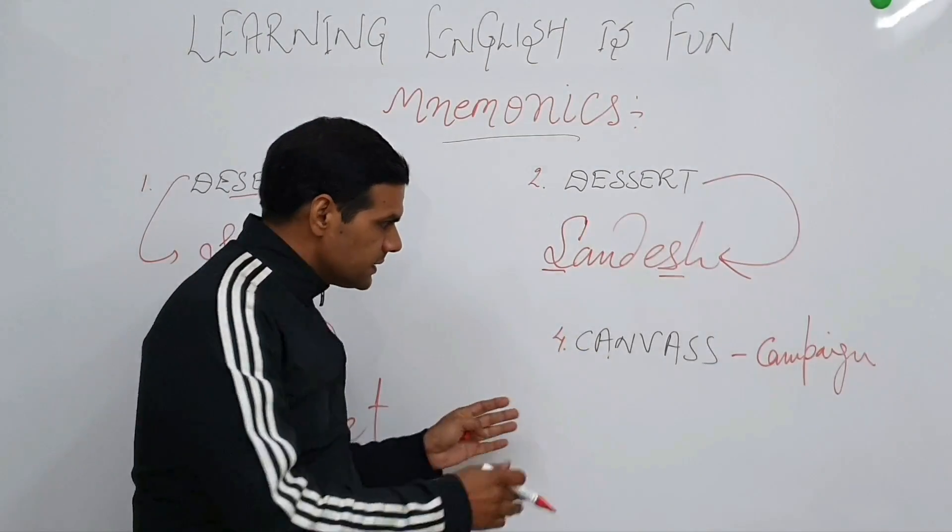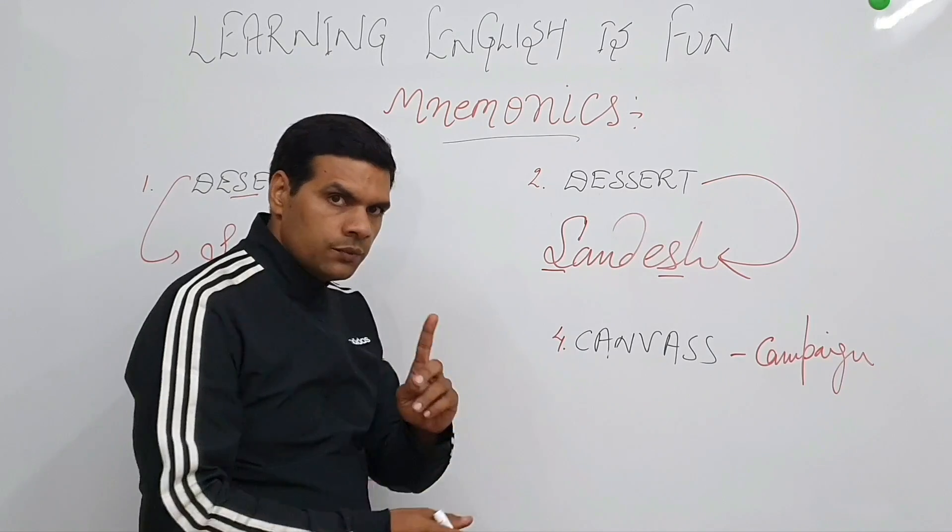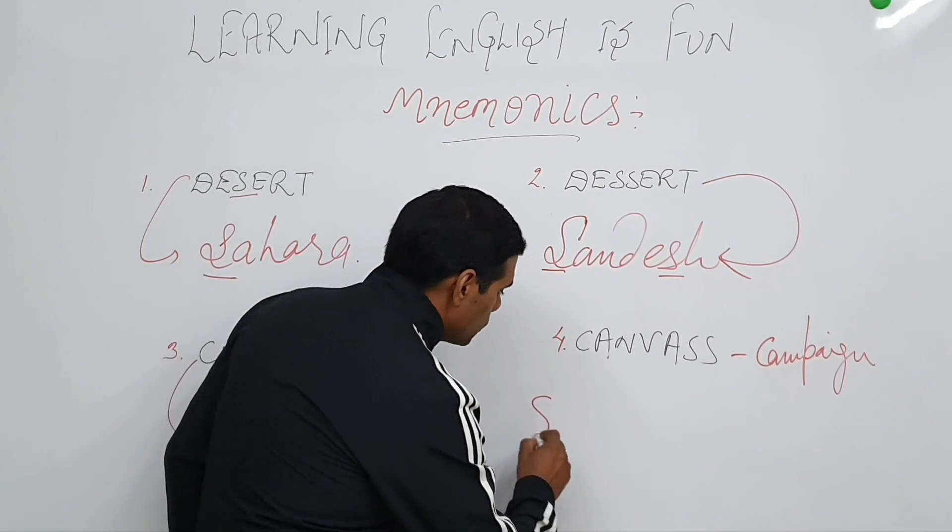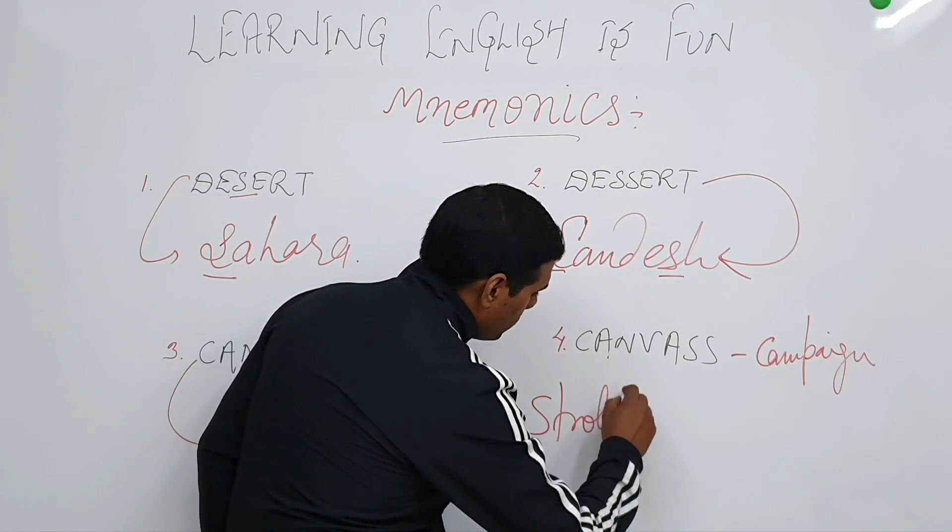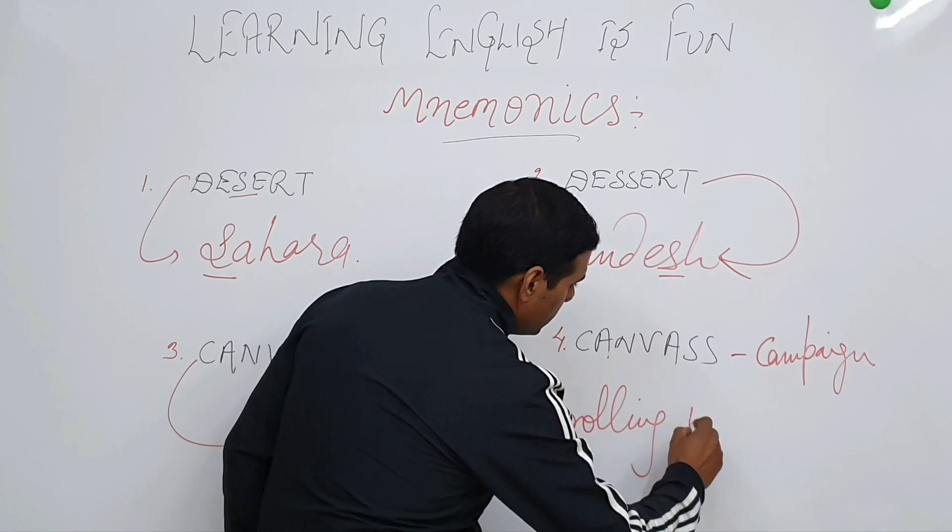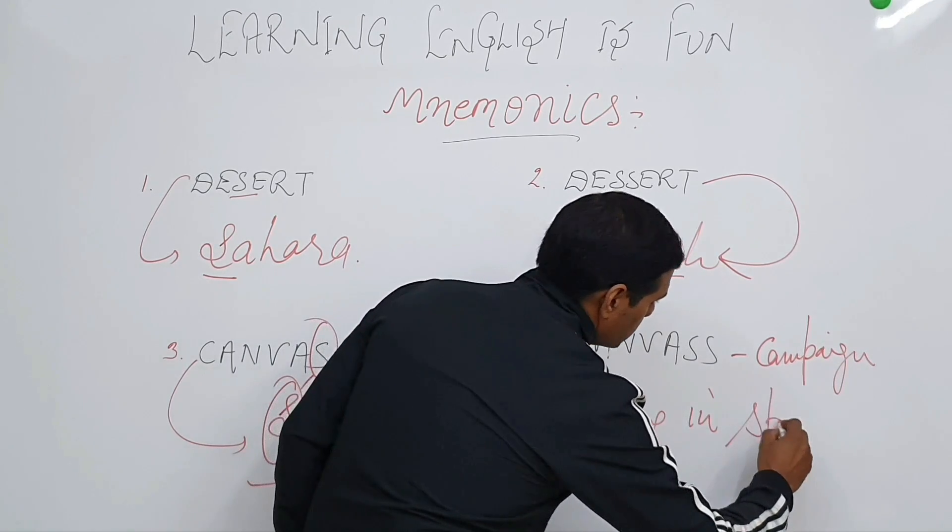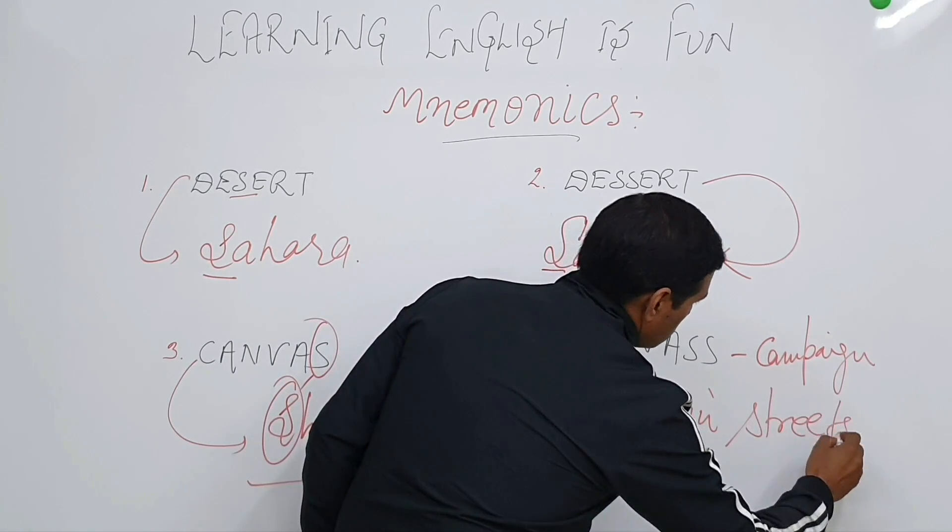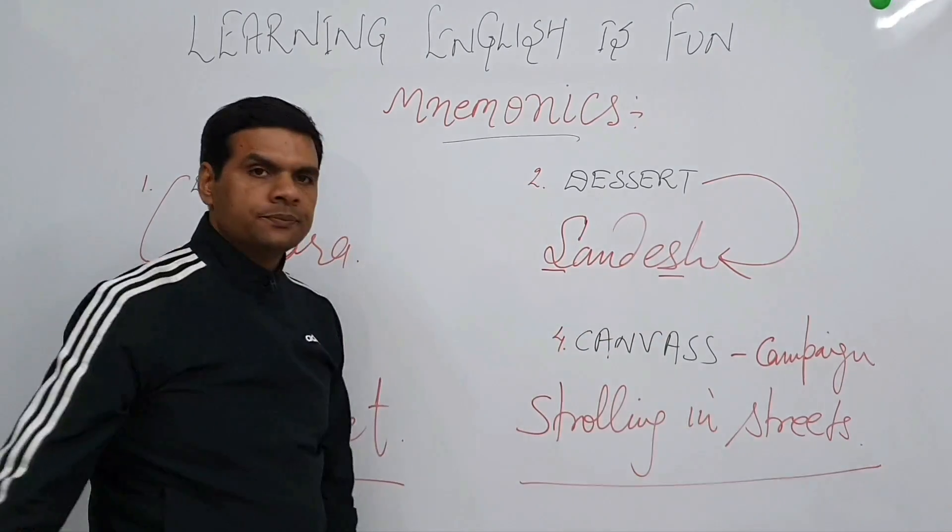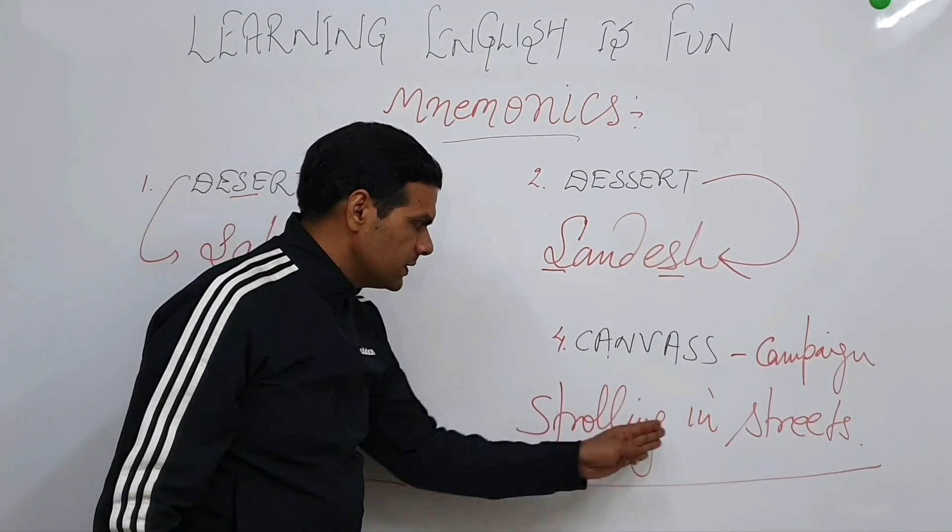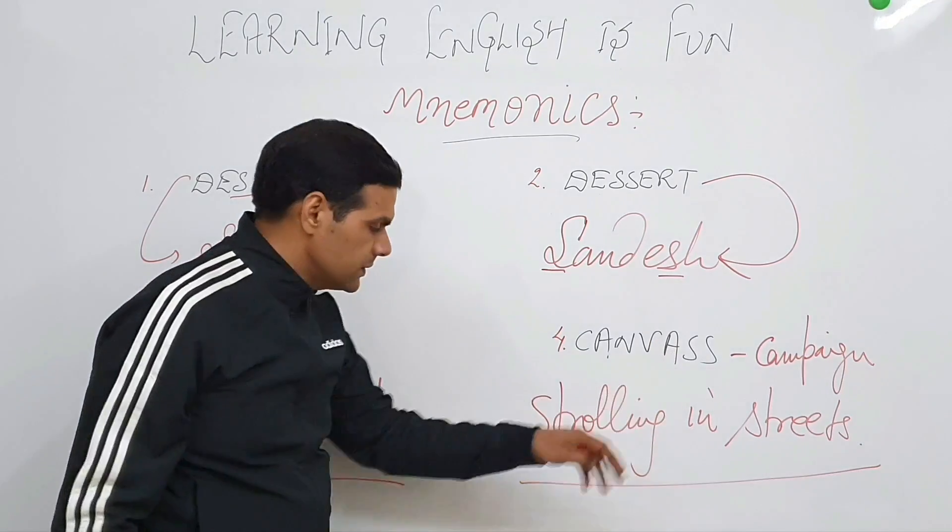So since this is from street to street, so we can say strolling, S-T-R-O-L-L-I-N-G, strolling in streets. Strolling in streets. This is the example. This is the meaning of this word canvass.